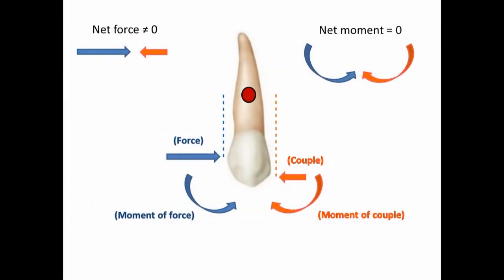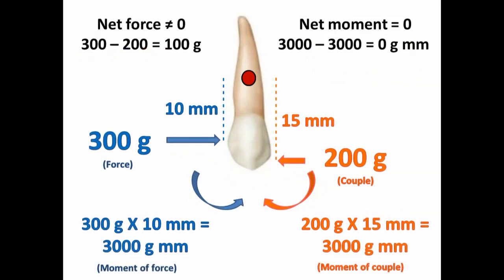If we apply a force of less magnitude at a farther distance from the centre of resistance, we can apply the same moment in the opposite direction, which cancels out and the tooth moves in a straight line. For example, if we apply a force of 300 grams at 10 mm distance from the centre of resistance, the moment of force would be 3000 gram·mm. To cancel out this moment, we apply a couple of 200 grams at 15 mm distance. The moment of couple cancels out the moment of force, hence the tooth moves in translatory motion under the influence of the resultant 100 gram force.